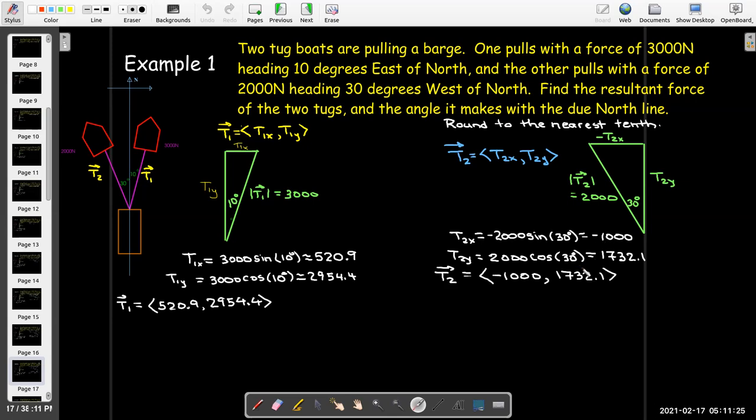Now we have components for both T1 and T2. To find the resultant, I just add them together. And I can see that, indeed, we are going to be pulling it slightly to the west, so to the left on our diagram.